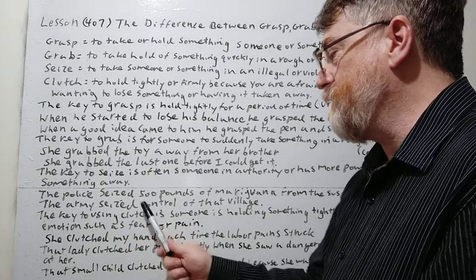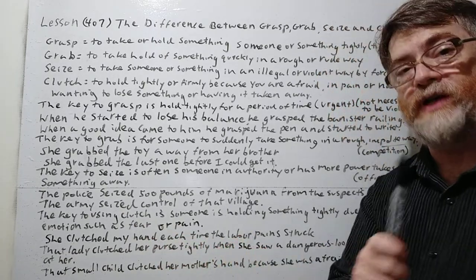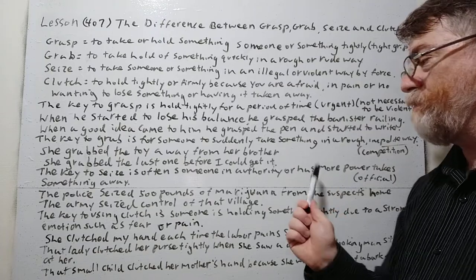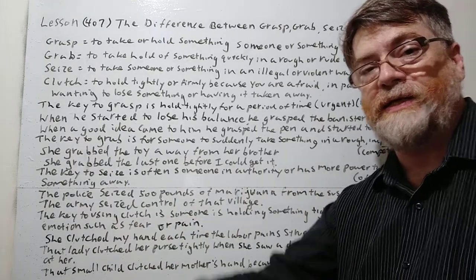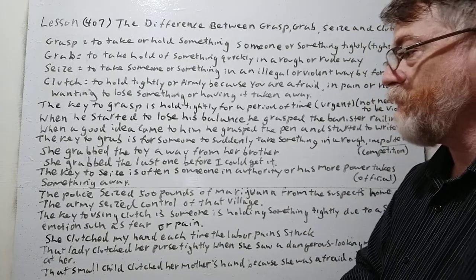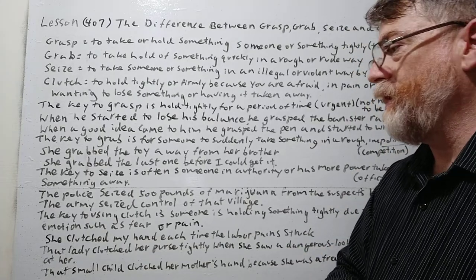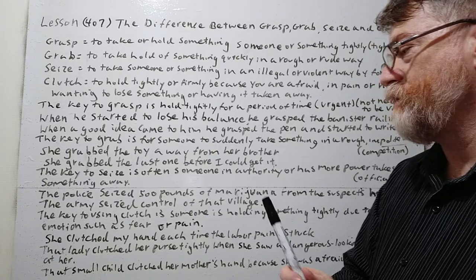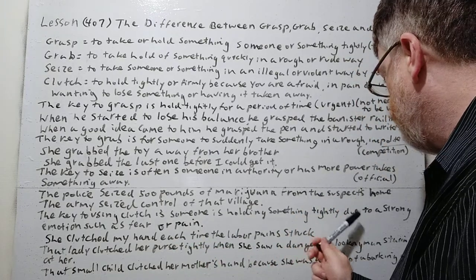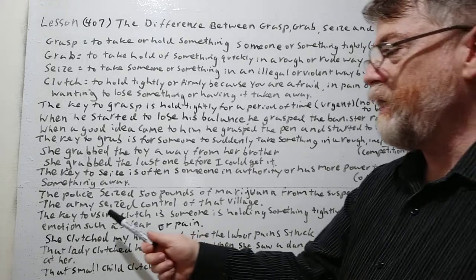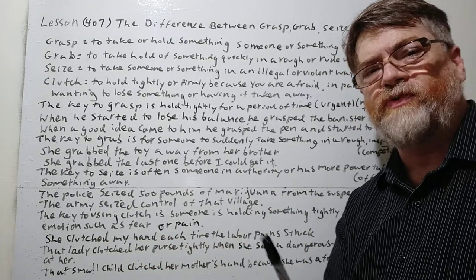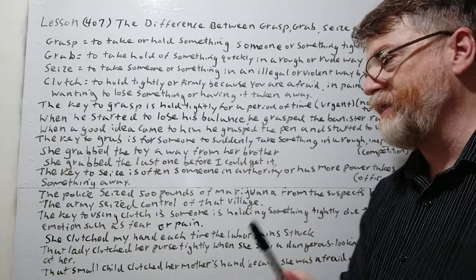Another example: the army seized control of that village. Again, somebody with power and authority taking something away from somebody else by force. The key to clutch is that someone is holding something tightly due to a strong emotion such as fear, pain, or discomfort.